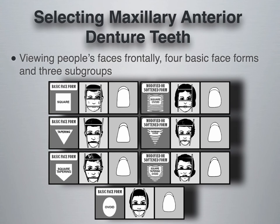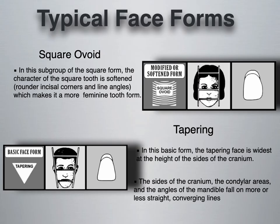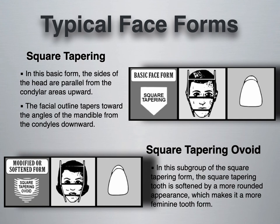The Air Force Manual describes four basic face forms: square, tapering, and ovoid. The modified subgroups are square ovoid, tapering ovoid, and square tapering ovoid. The presentation contains a breakdown of the definitions of each, which you should review on your own time — understanding which are the basic face forms and which are the subgroups.